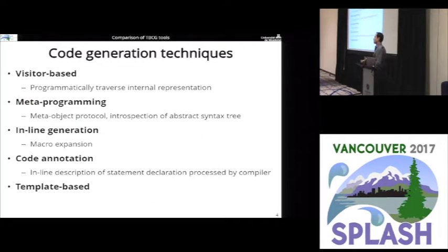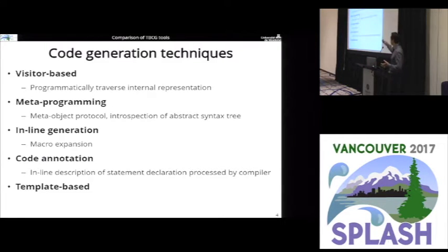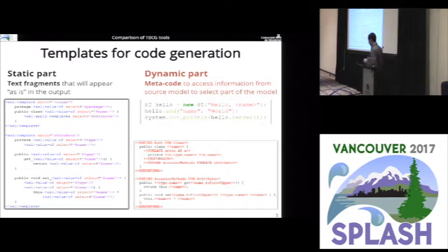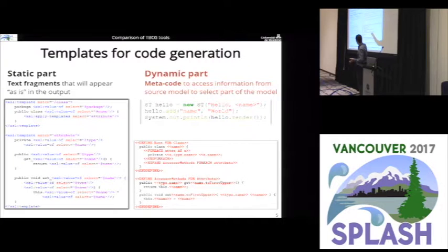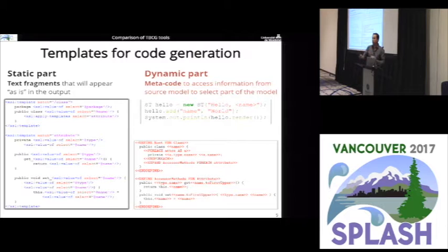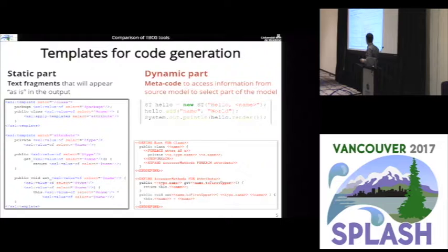There are various types of code generation techniques, and the one we're going to focus on is the template-based code generation technique. Others have been compared elsewhere, but none have been done for template-based code generation. The central part is that there is a template the user has to define. A template has basically a static part — text fragments that will appear in the output as is — and a dynamic part that is computed, meta code that accesses the input and prints it out in the output.